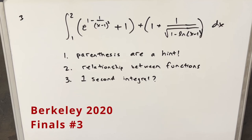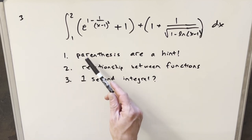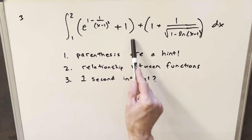Okay, I have here today a really interesting looking integral from the Berkeley Integration B 2020. We have the integral from 1 to 2 of this whole complicated thing, dx.